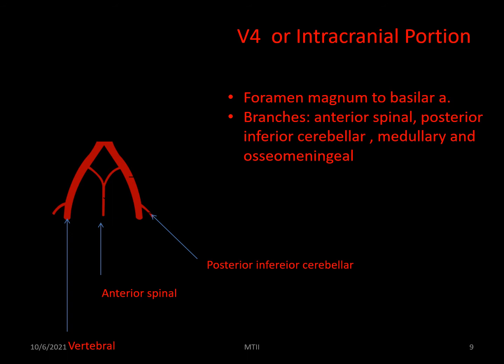The intracranial portion, or V4, runs up the front of the medulla and joins with its opposite number at the lower border of the pons to form the basilar artery. Its branches are the anterior spinal or sulcal artery and the posterior inferior cerebellar artery, or PICA.